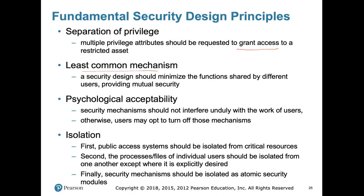Least common mechanism: while developing a countermeasure, minimize the functions shared between users. If you have multiple users, avoid common functionalities or common security mechanisms. Sharing a common function between user one and user two means that user one can come with part of that information and user two with another part, which opens doors to certain attacks or vulnerabilities involving more than one user.